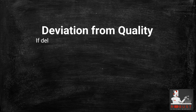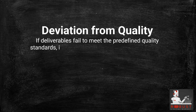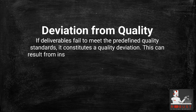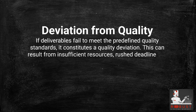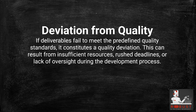Deviation from Quality: If deliverables fail to meet the predefined quality standards, it constitutes a quality deviation. This can result from insufficient resources, rushed deadlines, or lack of oversight during the development process.